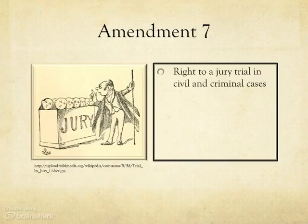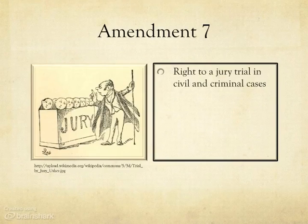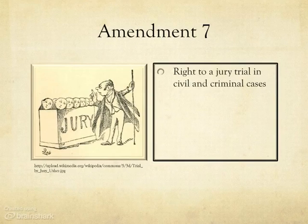According to the American Bar Association, a civil case involves conflicts between people or institutions, such as businesses, while criminal cases involve enforcing public codes of behavior as embodied in the laws, with the government prosecuting individuals or institutions. In a criminal case, the government brings charges against the person alleged to have committed the crime. The Seventh Amendment protects your right to a jury trial in either situation.